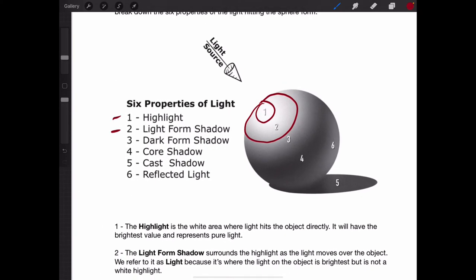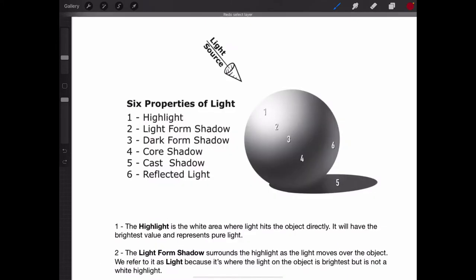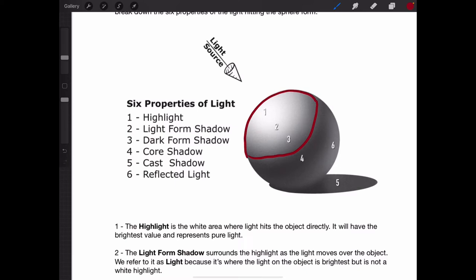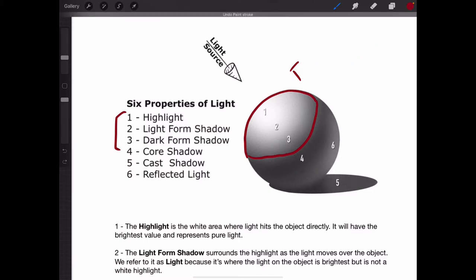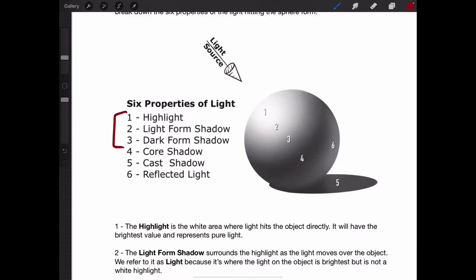After the area that's lightest — with the exception of the highlight — we're going to have what's called a dark form shadow. The dark form shadow is our middle value, and when we get to color, it's going to be the brightest, most intense color on the object. When we combine all three of these, we get what's called our form shadow. Technically, anything that's not the highlight is technically in shadow, but we're going to break it down into values instead.